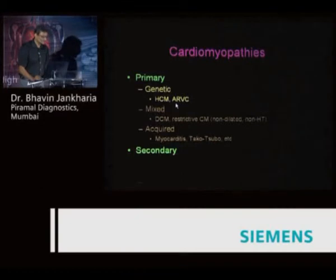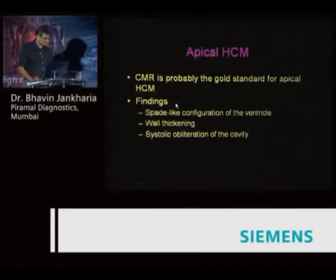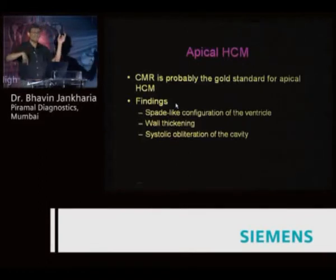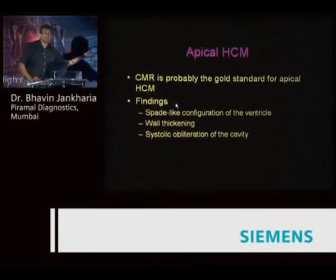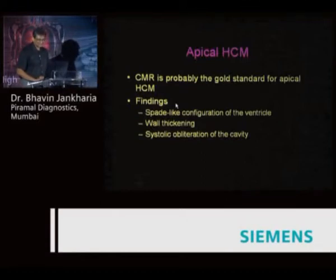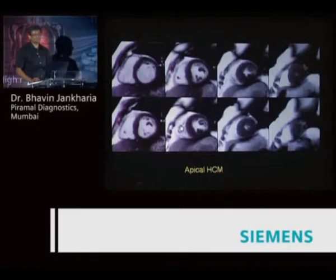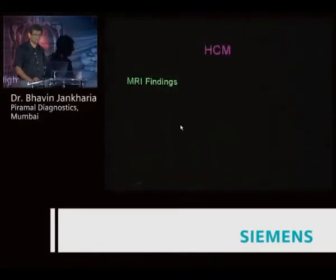Moving to the primary cardiomyopathies: hypertrophic, ARVC, and non-compaction. Among the hypertrophic cardiomyopathies, apical hypertrophy is reasonably common. These patients present with large inverted T waves, usually coming for health checkups. Echo is often normal because the apex touches the heart and apical hypertrophy can be missed. But MR is very good — you see systolic obliteration of the LV, a spade-like appearance, which is classic apical hypertrophy. We need delayed hyperenhanced images to see whether there is necrosis or fibrosis.